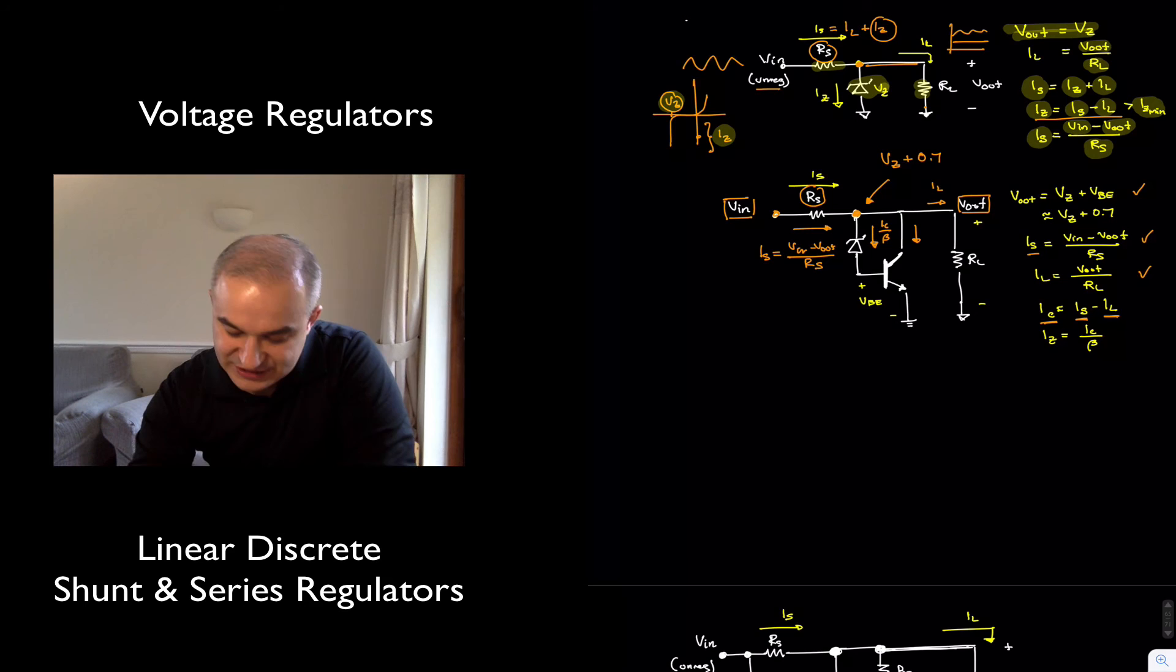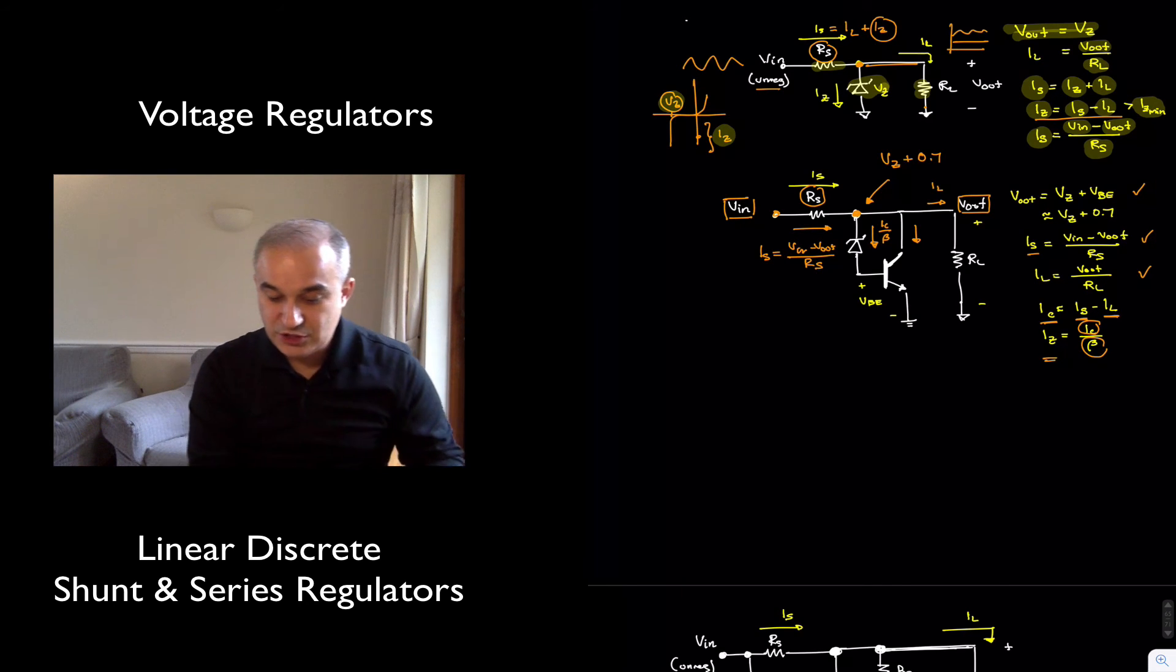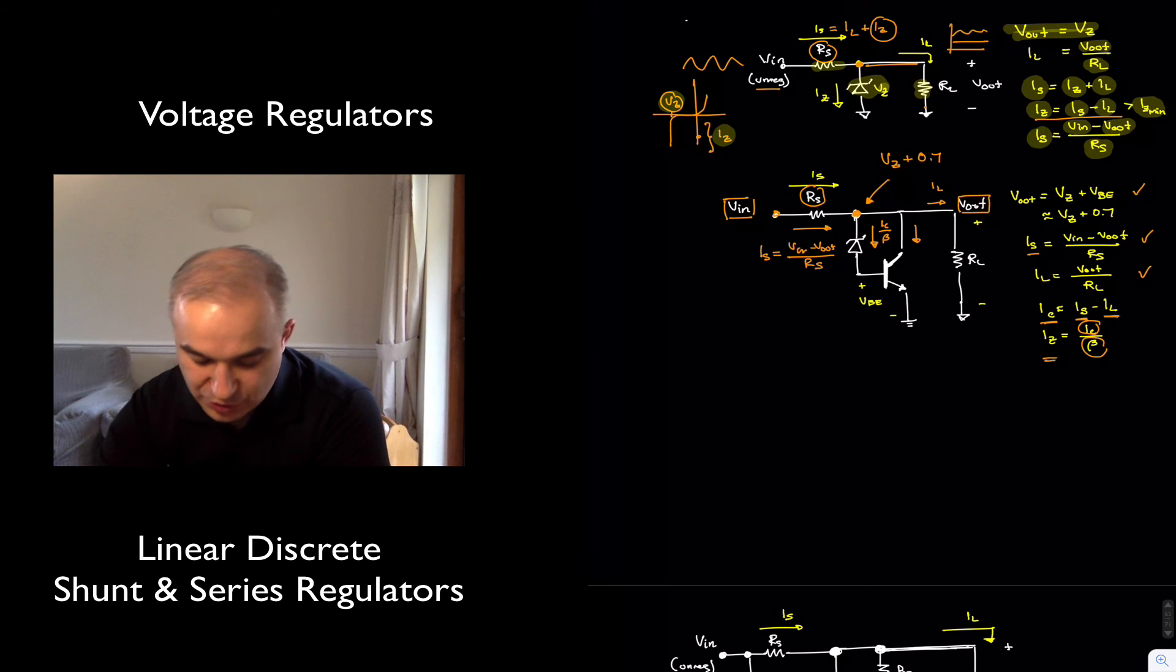But one advantage is that now the ZENER current is actually IC divided by beta.